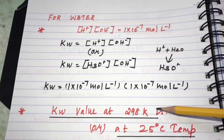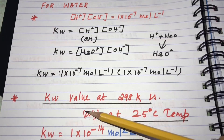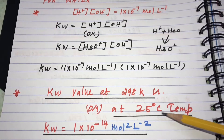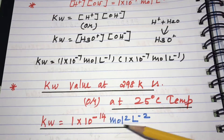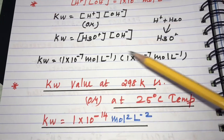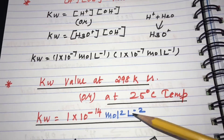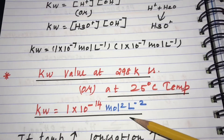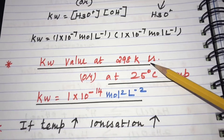From this calculation, the value of Kw at standard temperature — 298 Kelvin or 25°C — is 1 × 10⁻¹⁴ mol² L⁻². This is the value of the ionic product of water at 298 K.